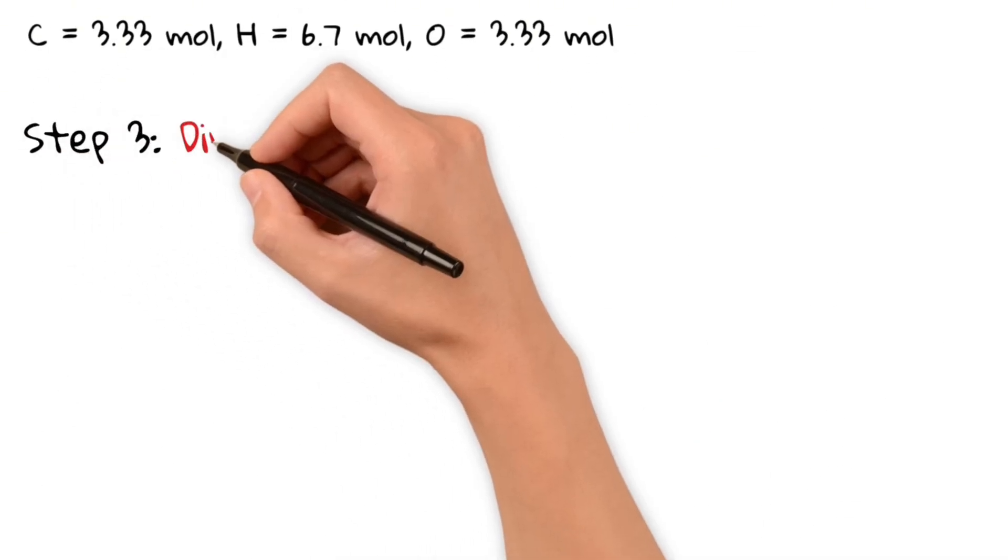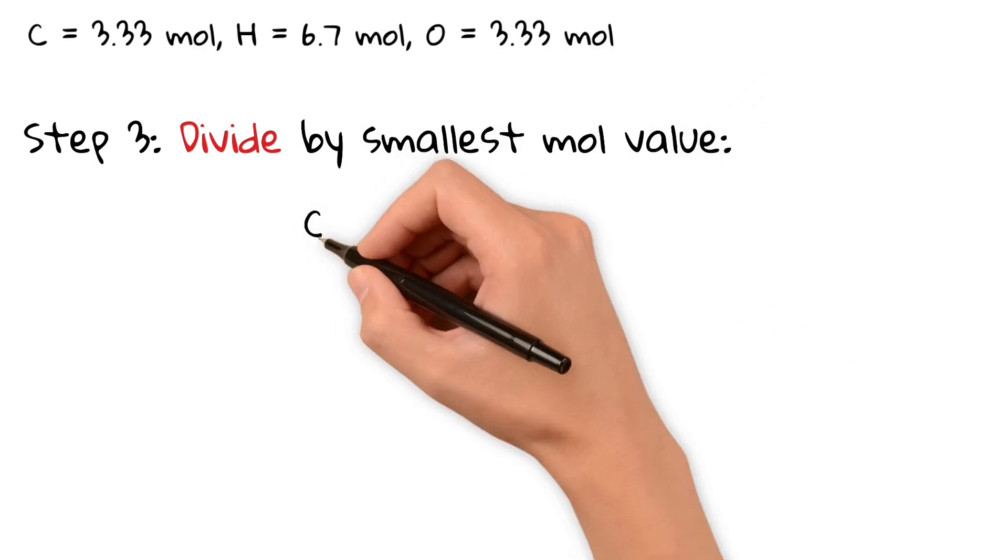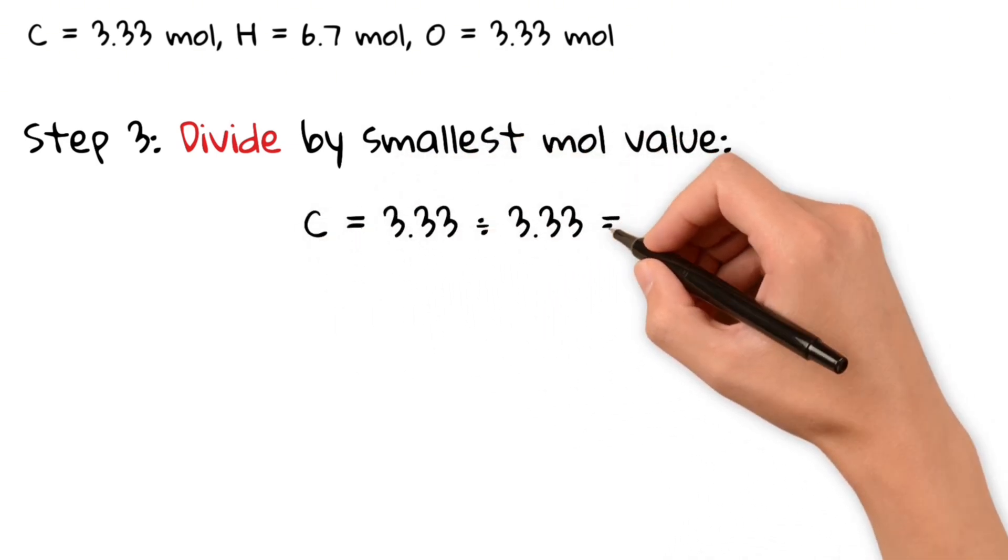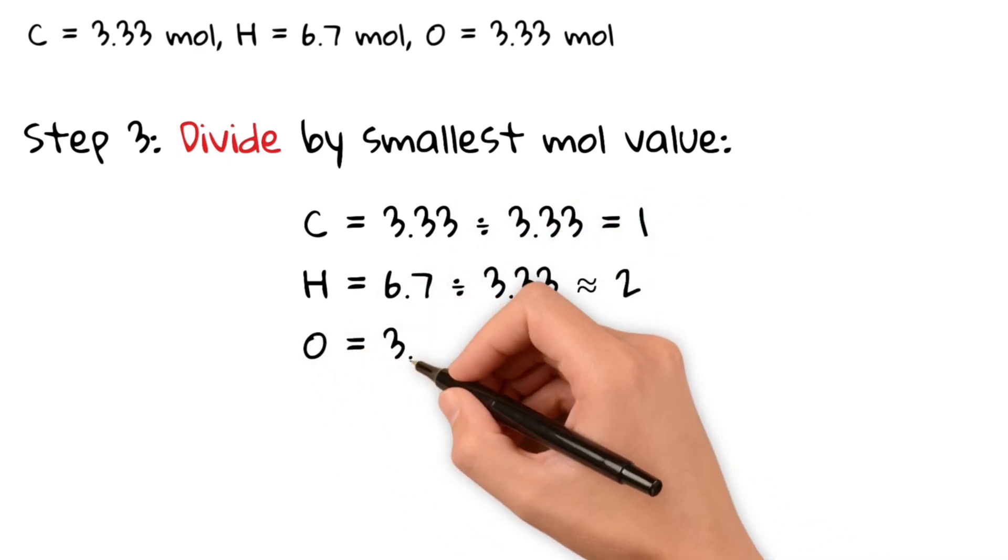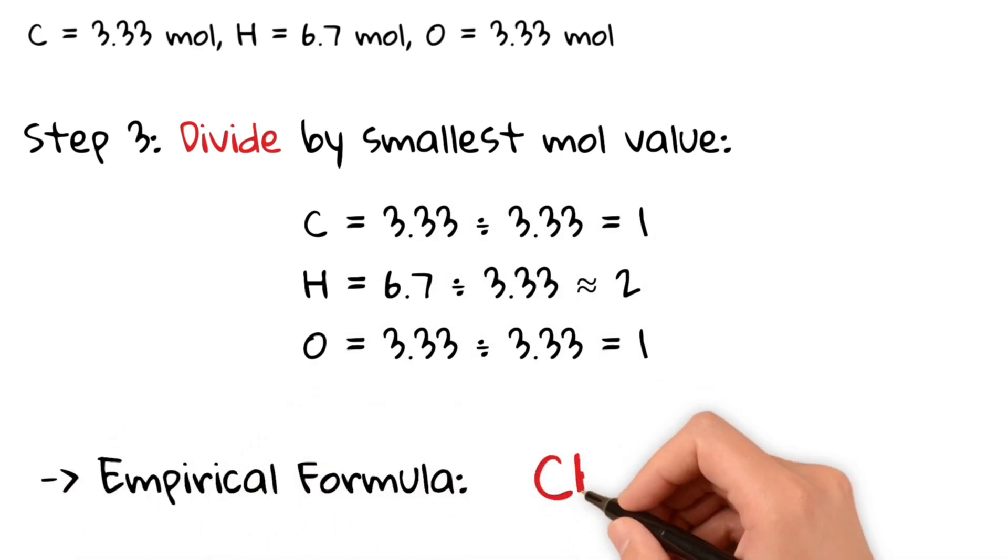Now, we simply divide each mole value by the smallest mole value, which is 3.33. This gives us the following ratio: one carbon, two hydrogen and one oxygen. So, therefore, our empirical formula is CH2O.